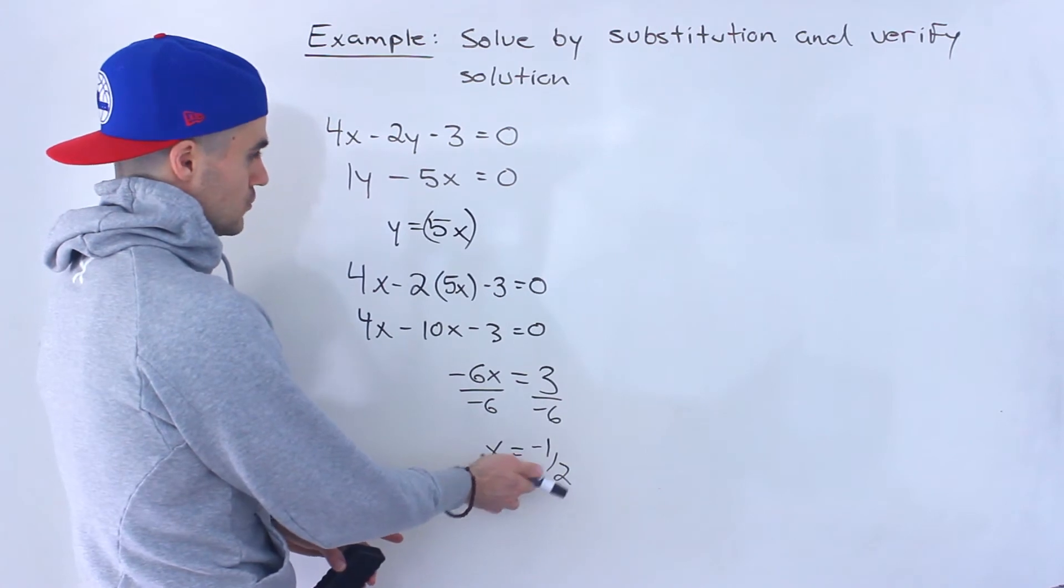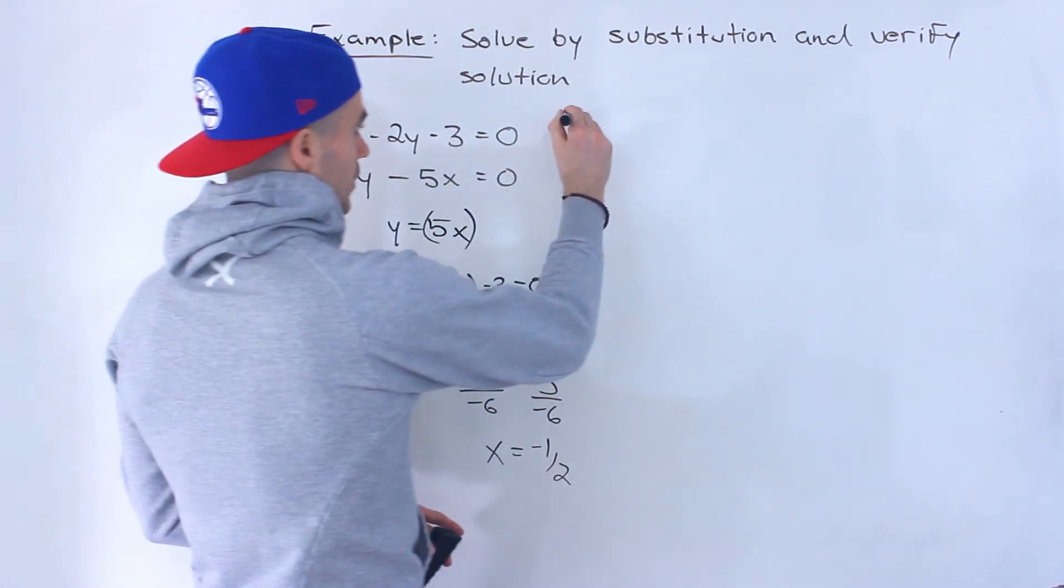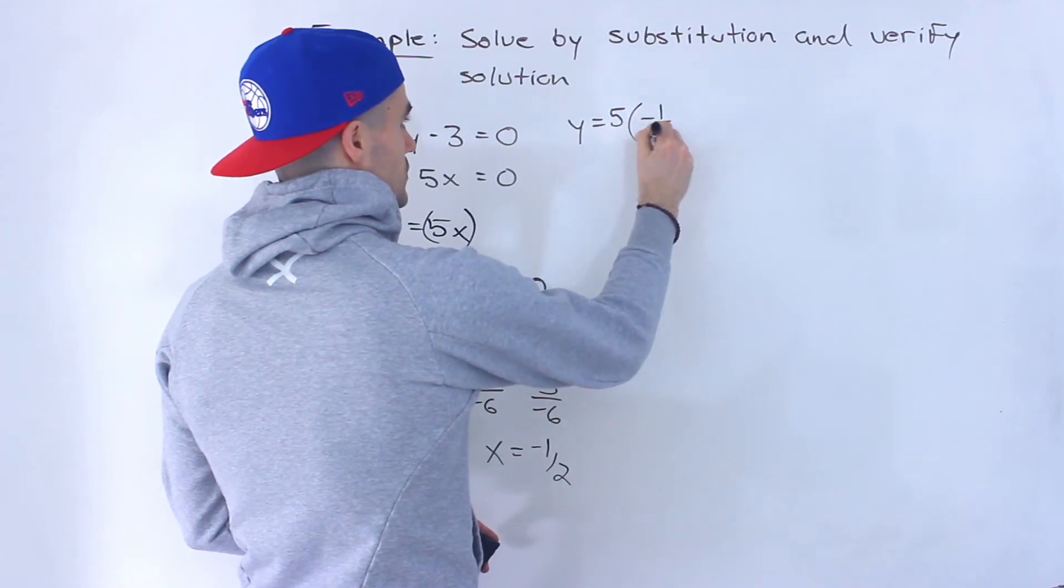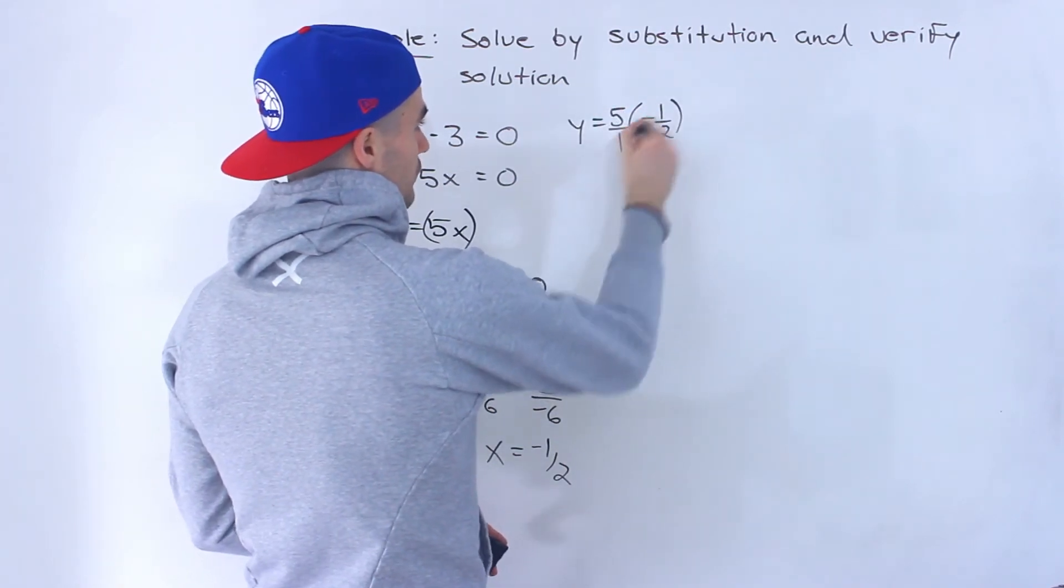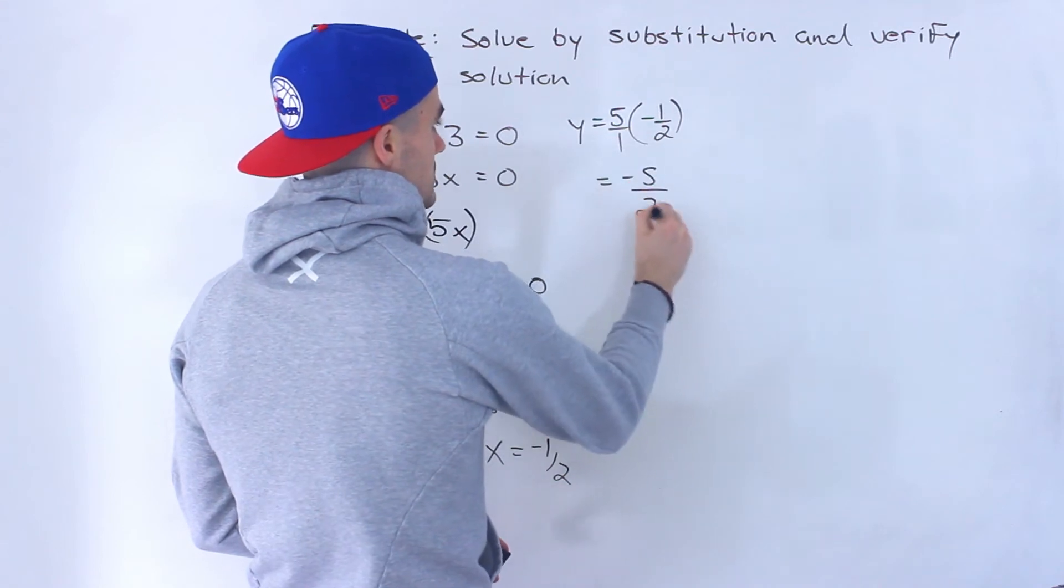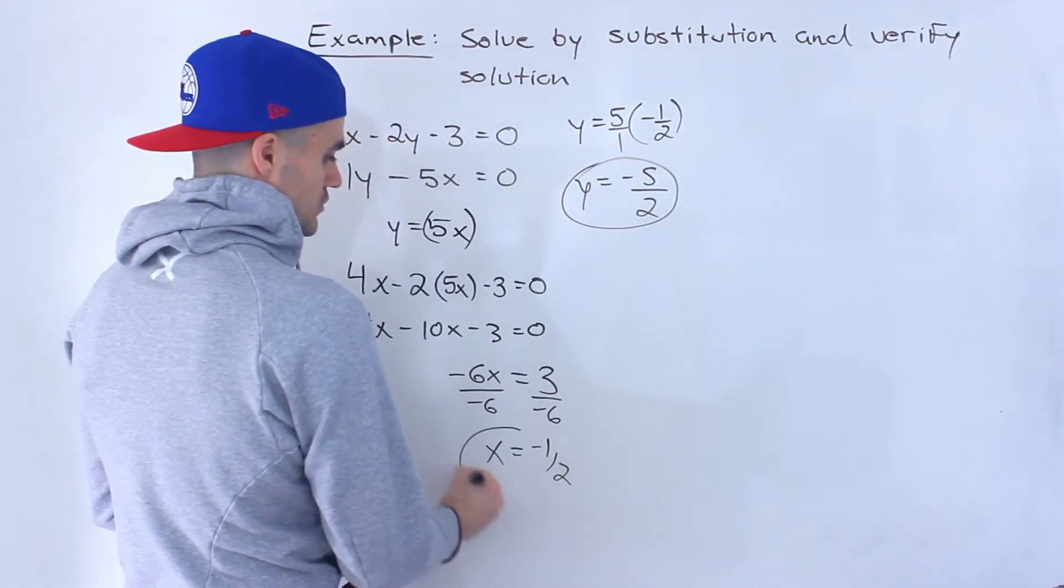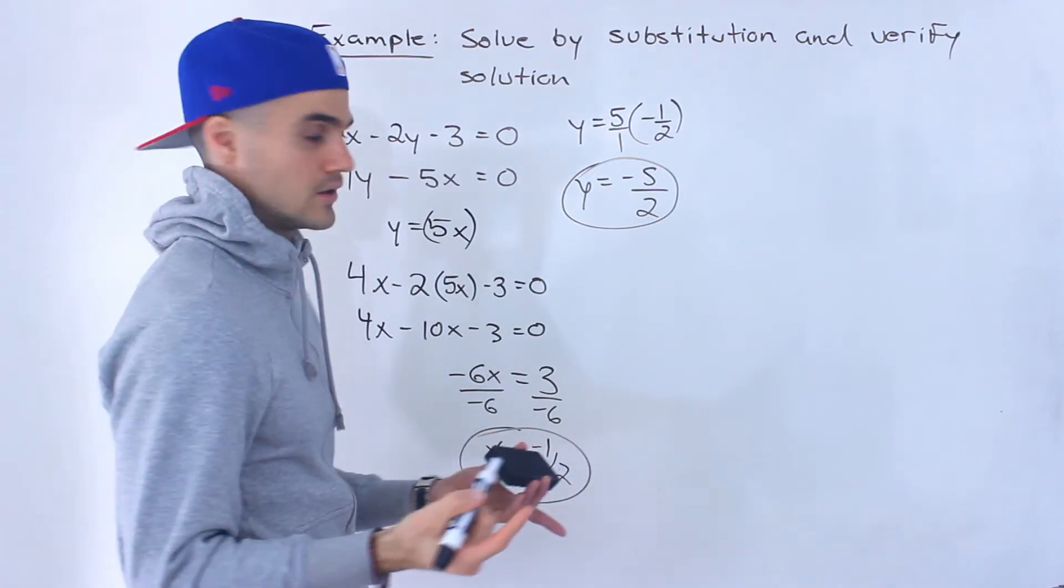The y value is easy to get; we just plug it in here. So we'll have y equals 5 times negative 1 over 2. This is like 5 over 1. 5 times negative 1 is negative 5, 1 times 2 is 2, so the y value is negative 5 over 2.